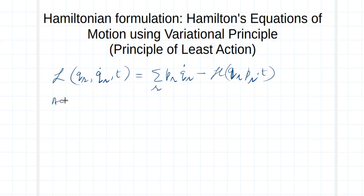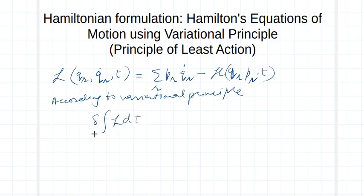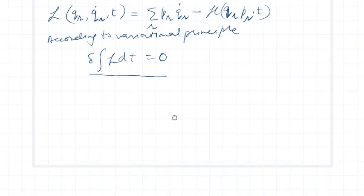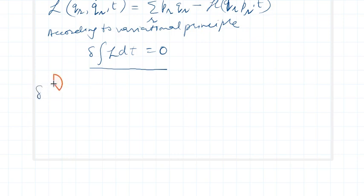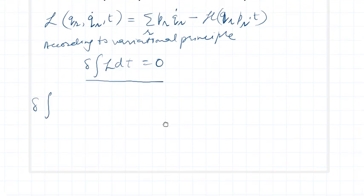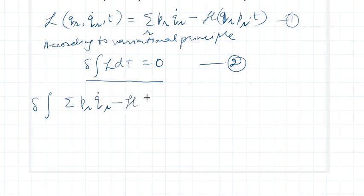According to the variational principle, the action must be least — that is, the change in this action should be zero. This is the variational principle, or the principle of least action. Using this, I can write delta of the integral equal to zero, and substituting the value of the Lagrangian from equation one into equation two: delta of integral of summation p_r * q_r_dot minus H(q_r, p_r, t) dt = 0.